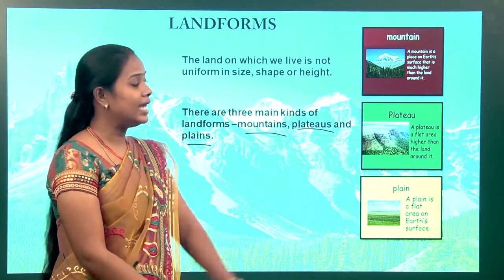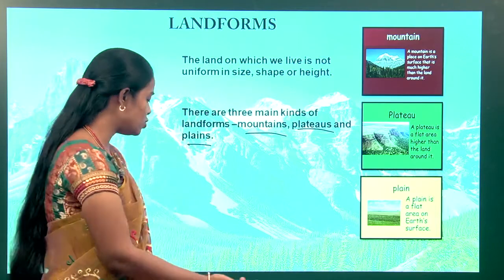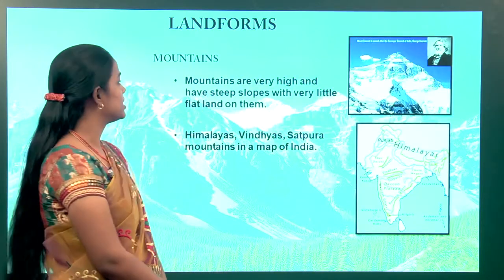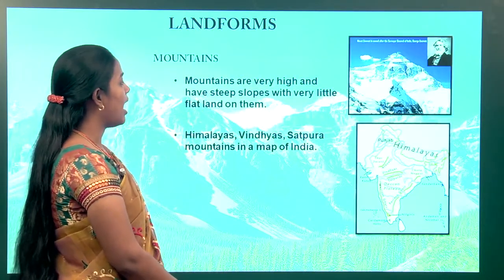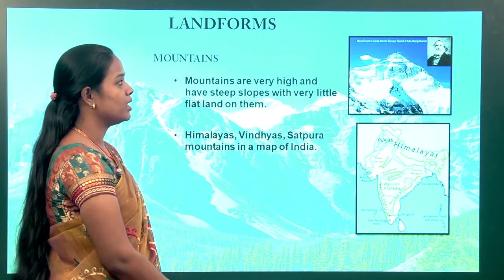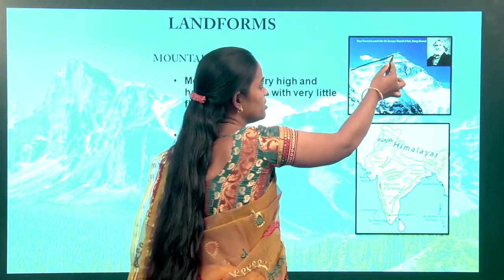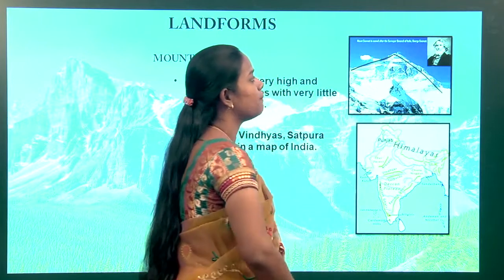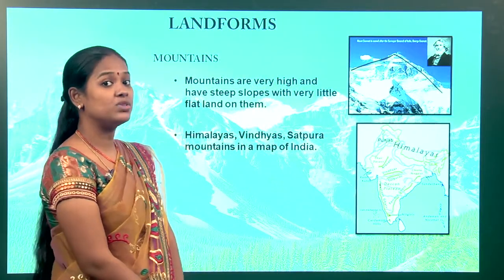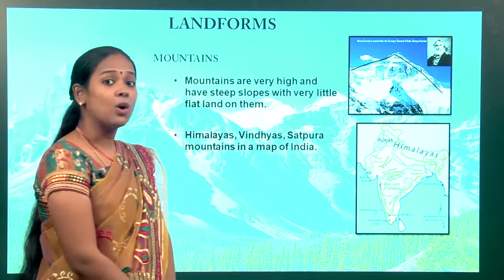We are going to learn in detail about mountains, plains and plateaus. Mountains are very high and have steep slopes with very little flat land on them. As you can see in the picture, this is the steep slope. This is the highest peak, which is called Mount Everest.